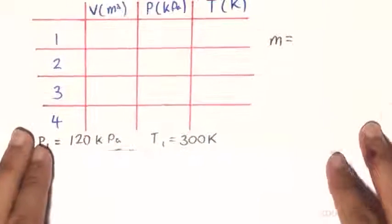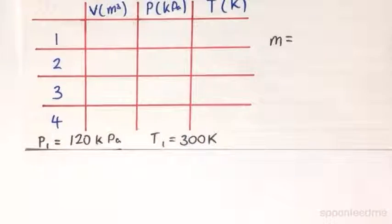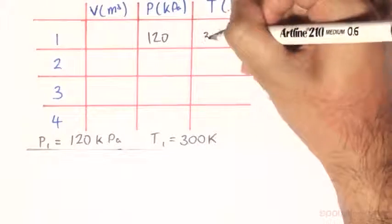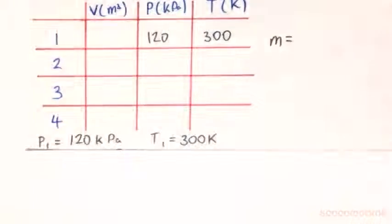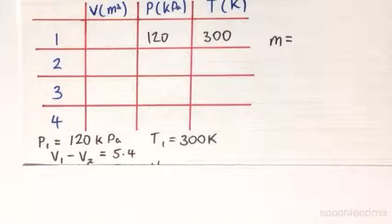So now, we are given already that the pressure at state 1 is 120 kilopascals, and the temperature is 300 Kelvin. So therefore, we need to look at the...